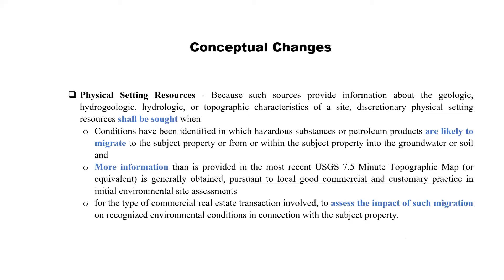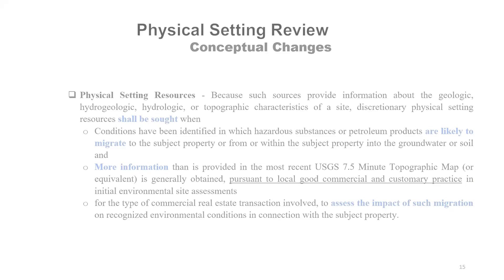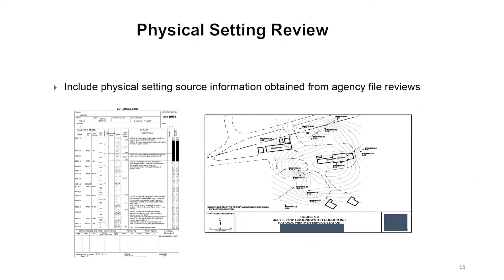With physical setting sources, we've traditionally relied on the USGS topographic map, primarily as a gross way of determining what's up-gradient and down-gradient, assuming that groundwater flow follows topography. But the reality is that's not always the case. We've now mentioned that there are other types of physical setting source information that could assist with determining migration patterns — be it soils, groundwater maps, or potentiometric surface maps — and that these are easily obtained. To the extent you need them or they would assist, we ask that you review them.